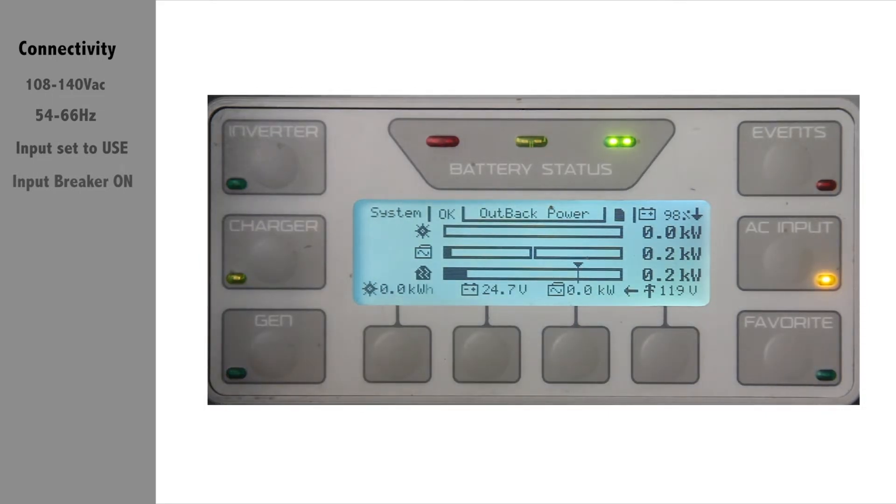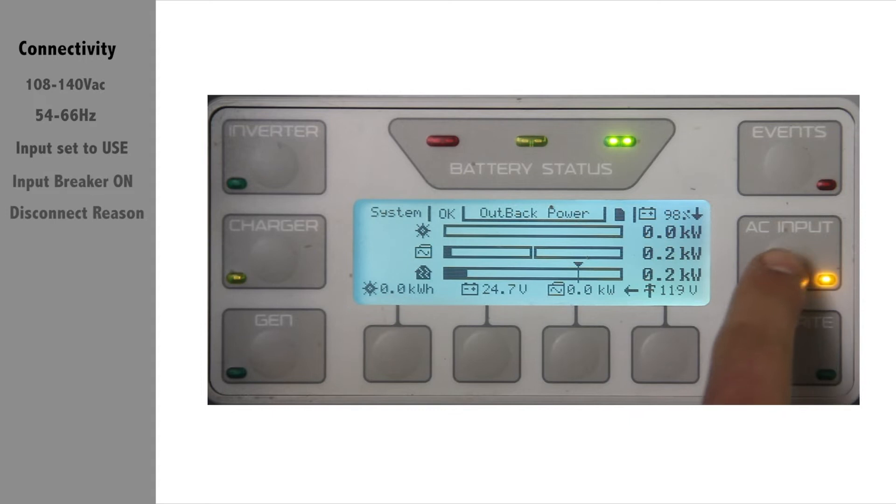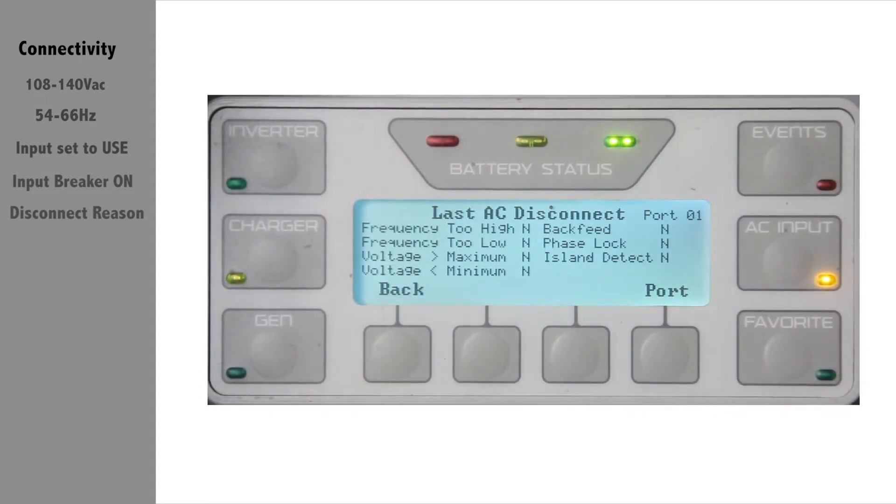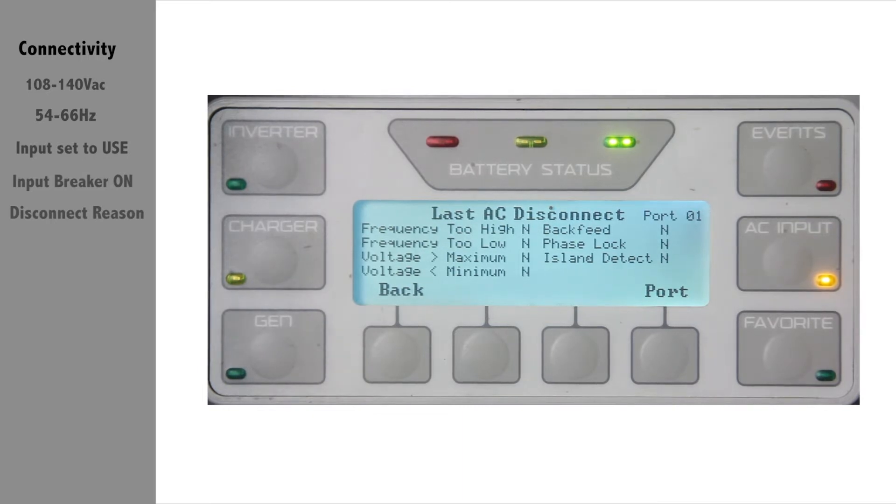If this is the case, you can find out why the inverter rejected generator power by going to the Mate 3, then press the AC input hotkey, then press on disconnect. Here it will show you the last AC disconnect reason.